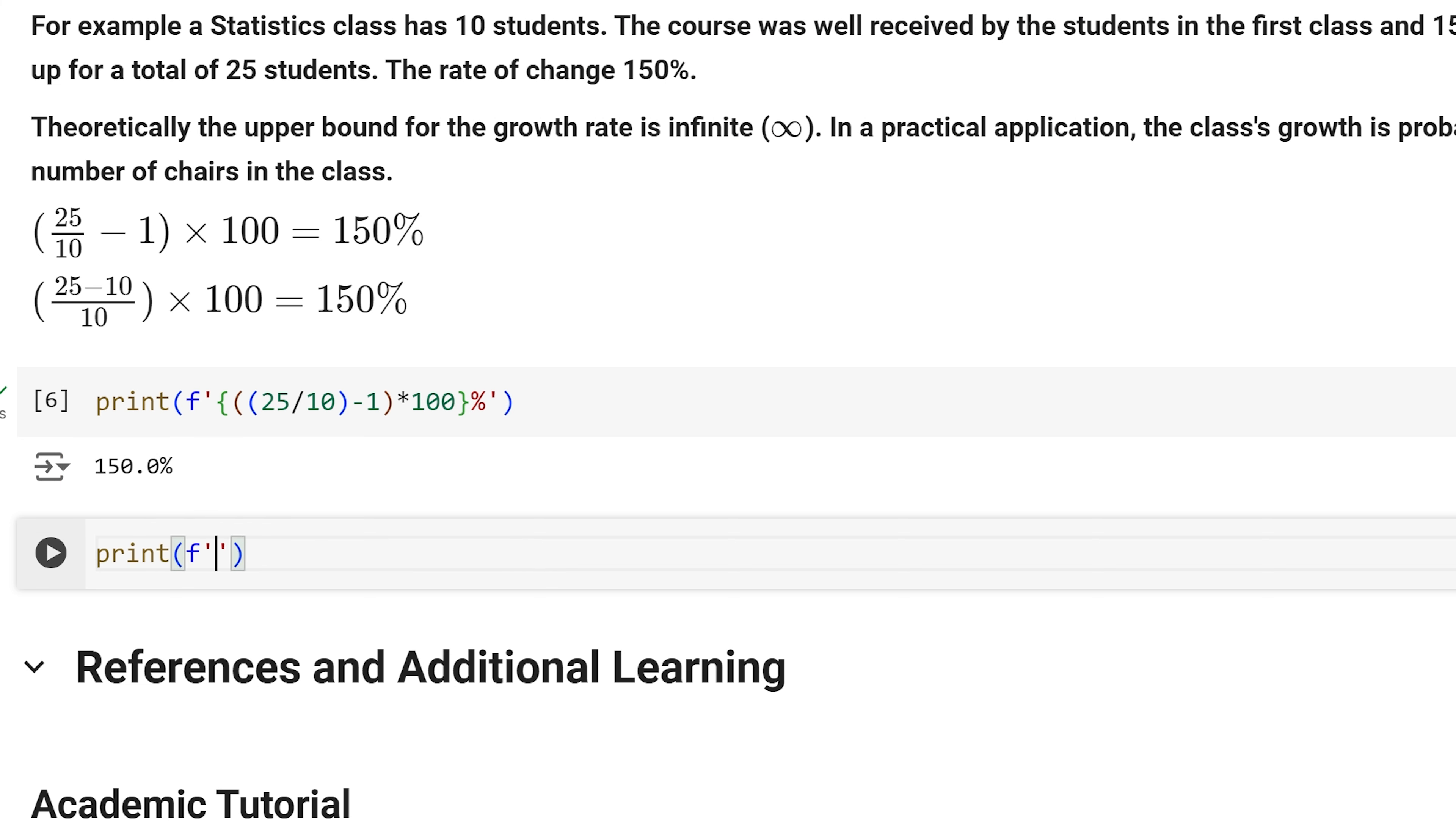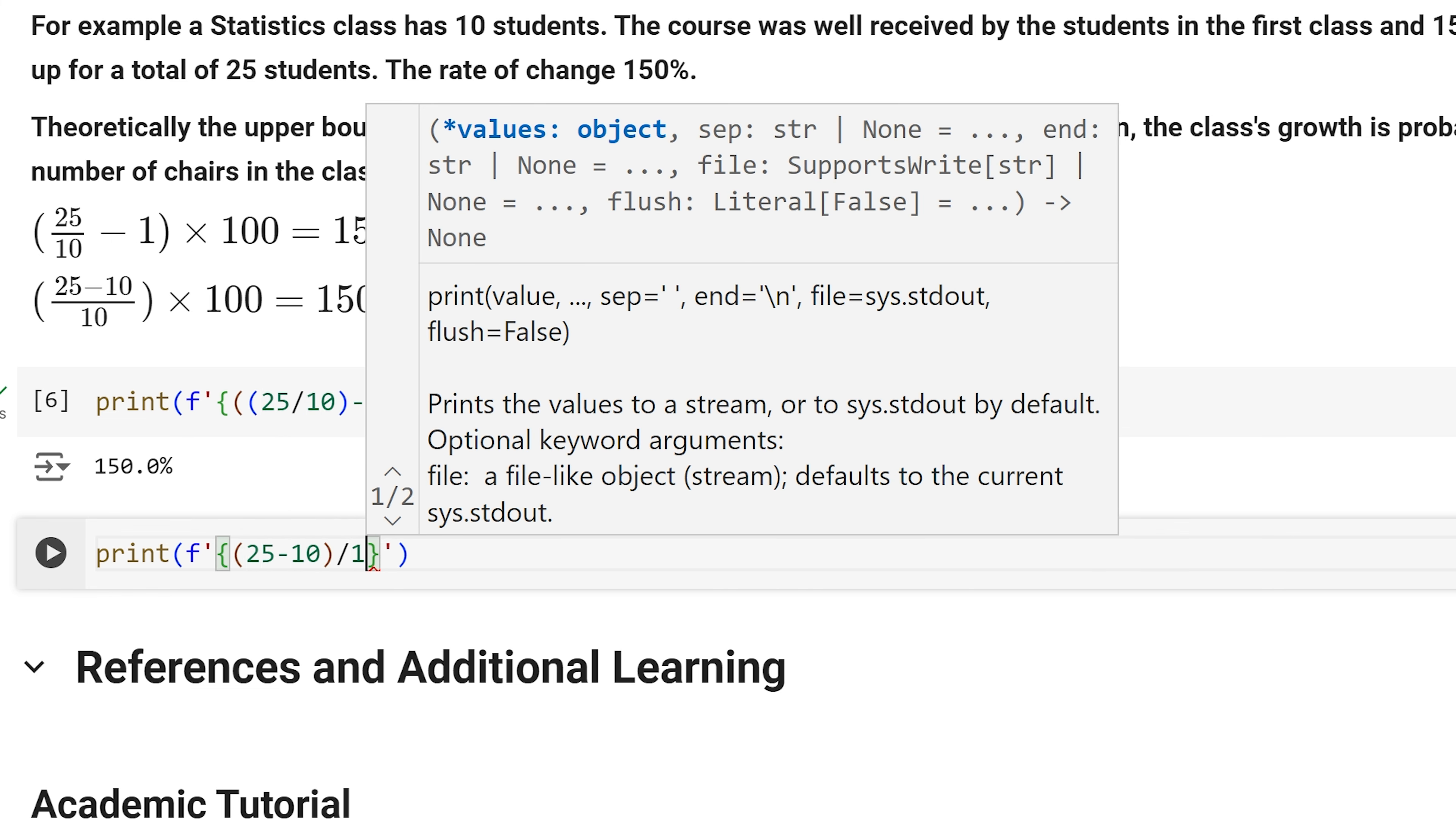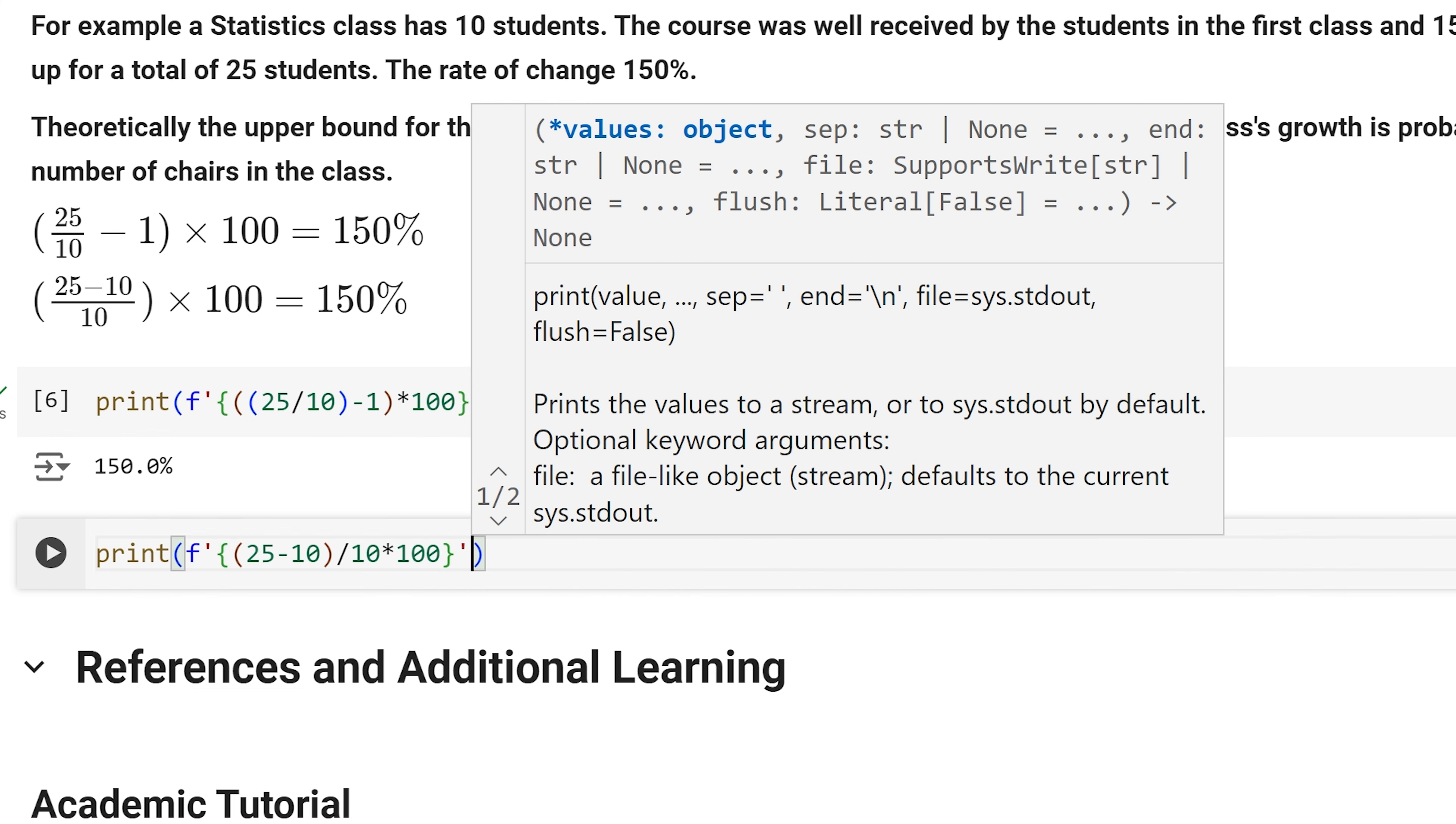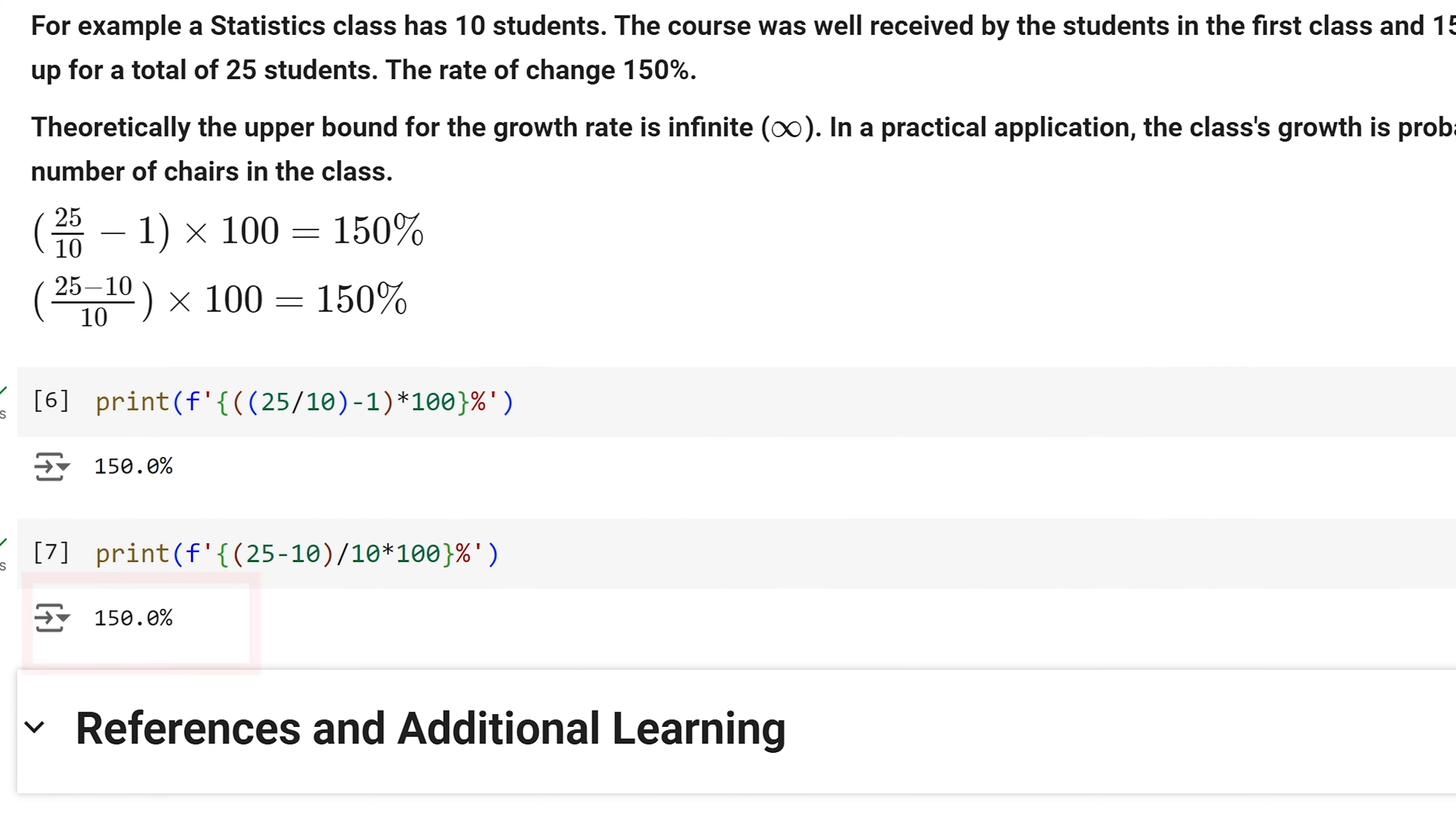Now we will use the second method. In the numerator, I will take the difference of the current value of students, which is 25, subtracted by the initial amount of students, which is 10, divide it by 10, and multiplied by 100. As expected, we have 150 percent.